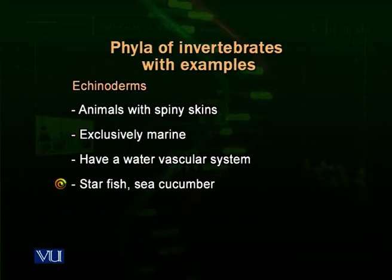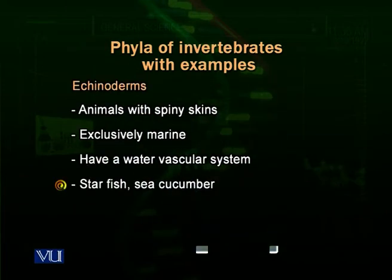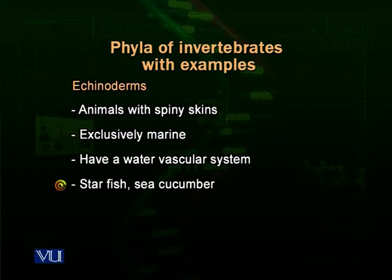Echinoderms are thought to be the link between invertebrates and vertebrates, because they have certain characteristics matching invertebrates and others matching vertebrates. Examples are starfishes — very beautiful specimens visible in museums. Other examples include sea cucumbers and feather stars, which look like the feathers of a bird. They add to the beauty of the oceans, and if you go to the ocean bottom, you can see many echinoderms. They also make an important part of the food chains and food webs of seas and oceans.